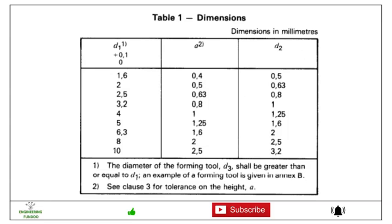Now let's see the dimensions. Here you can see d1 with tolerance of plus 0.01, and the variation ranges from 1.6 to 10 mm. Then A, the height of the projection, is 0.4 for 1.6 and 2.5 for 10. Then we have d2: it is 0.5 for 1.6 and 3.2 for 10. These are the various ranges over which you can select the projection.